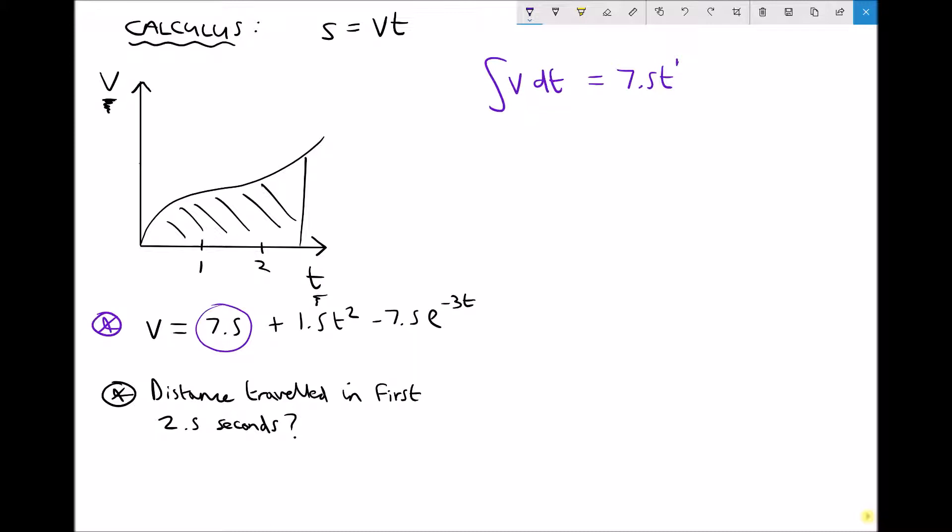The next function that we need to integrate is 1.5t squared in our original function. So when we integrate that, we raise the power of t by 1, which will give us t cubed. And then we divide by the new power. So our coefficient of 1.5 in the original function needs to be divided by 3. Well 1.5 divided by 3 is just 0.5.